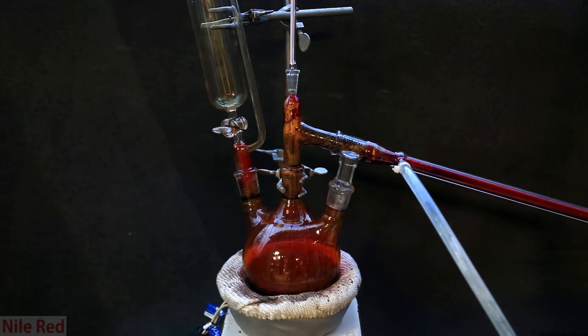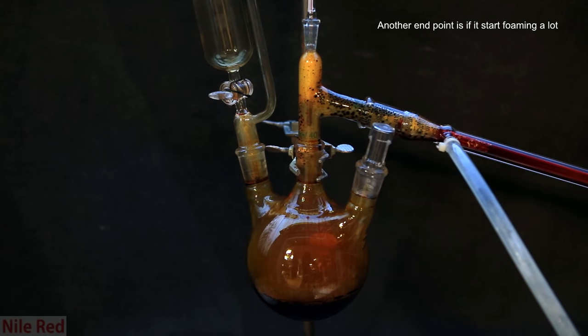As we continue to boil it, you'll start to notice a yellow color appearing, and the red color diminishing. At this point, the distillation is done, and we can take it off heating.